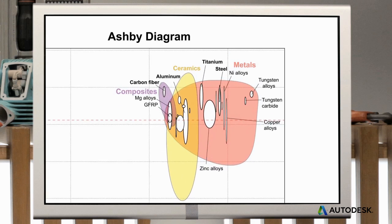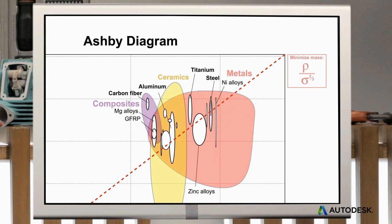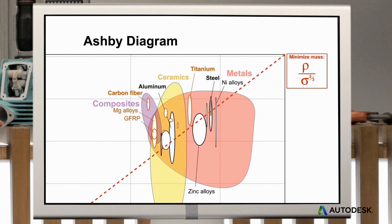To optimize your choice among the remaining materials, you can plot a guideline based on your objectives, constraints, and geometry. In this example, materials on the line perform equally well, and those above the line perform better. So you can see aluminum, steel, titanium, and carbon fiber could all be good options.